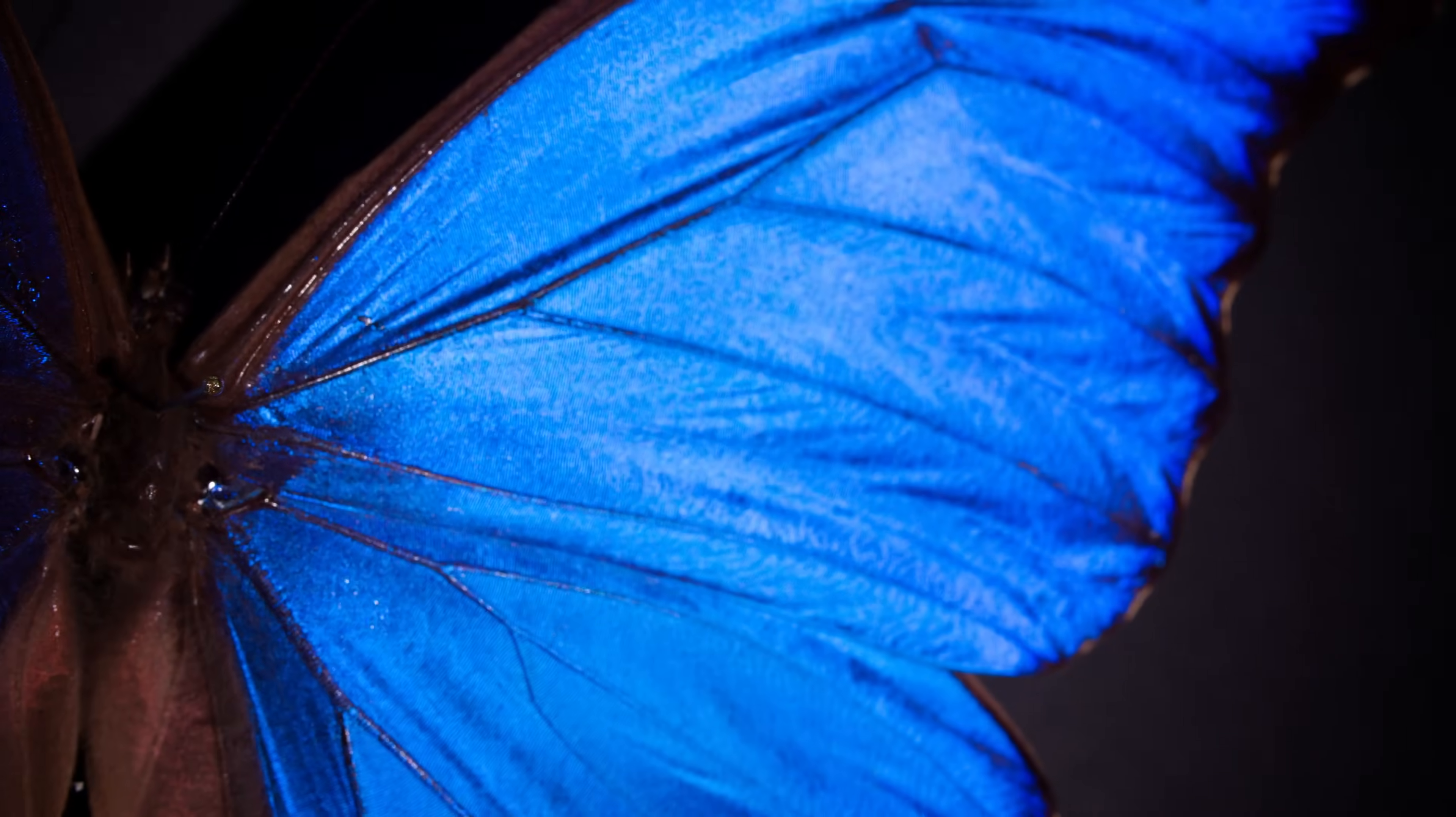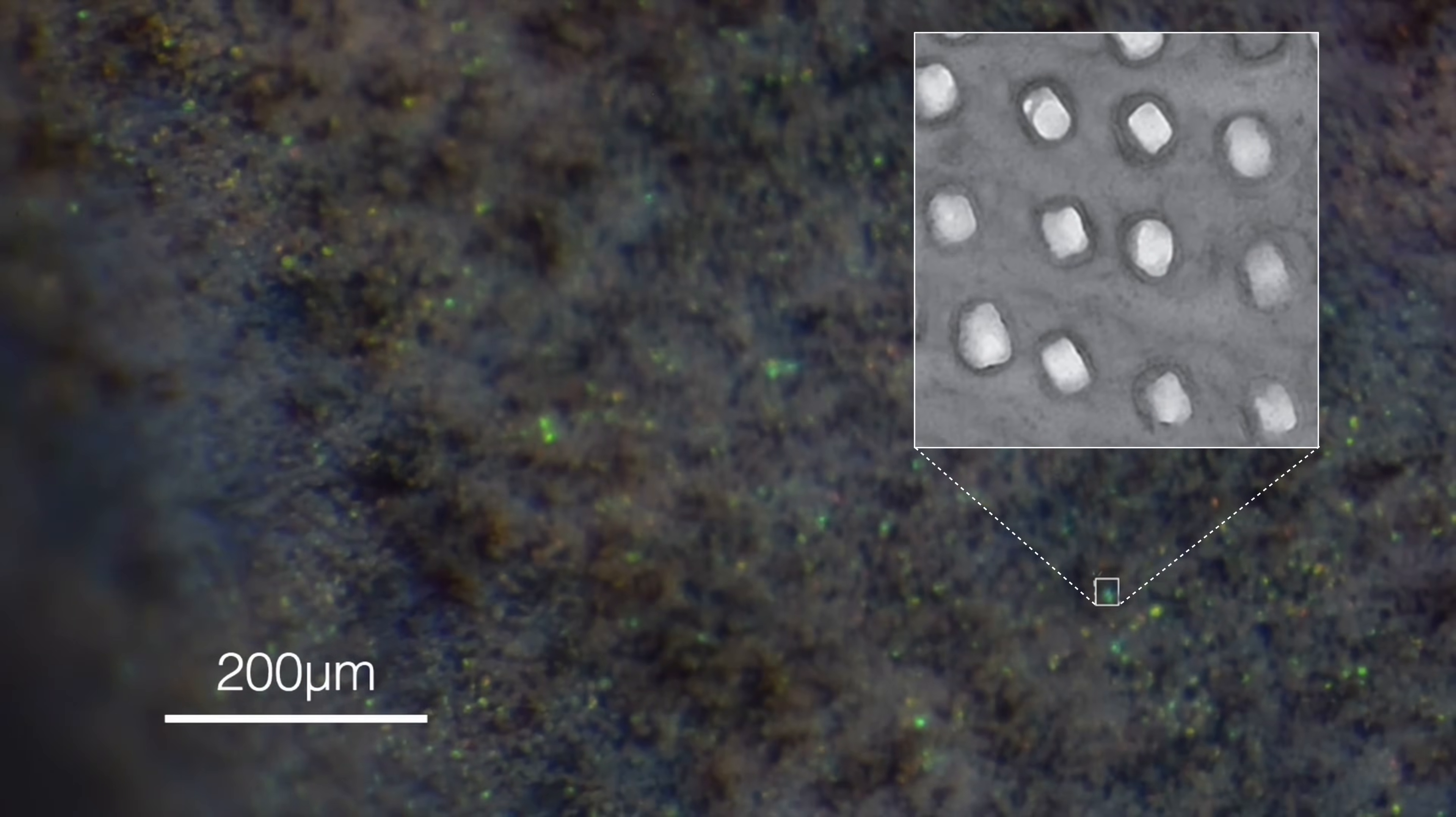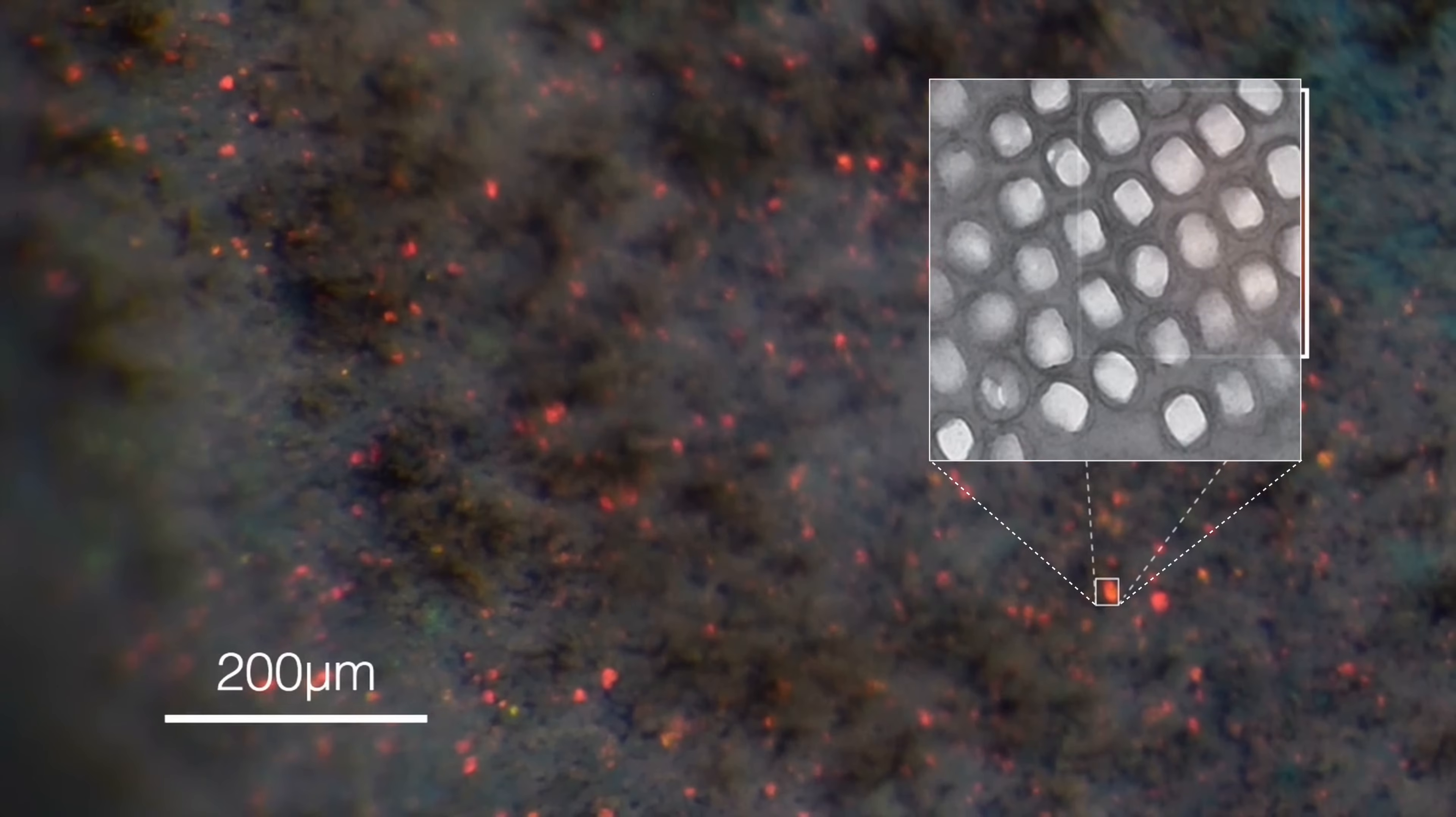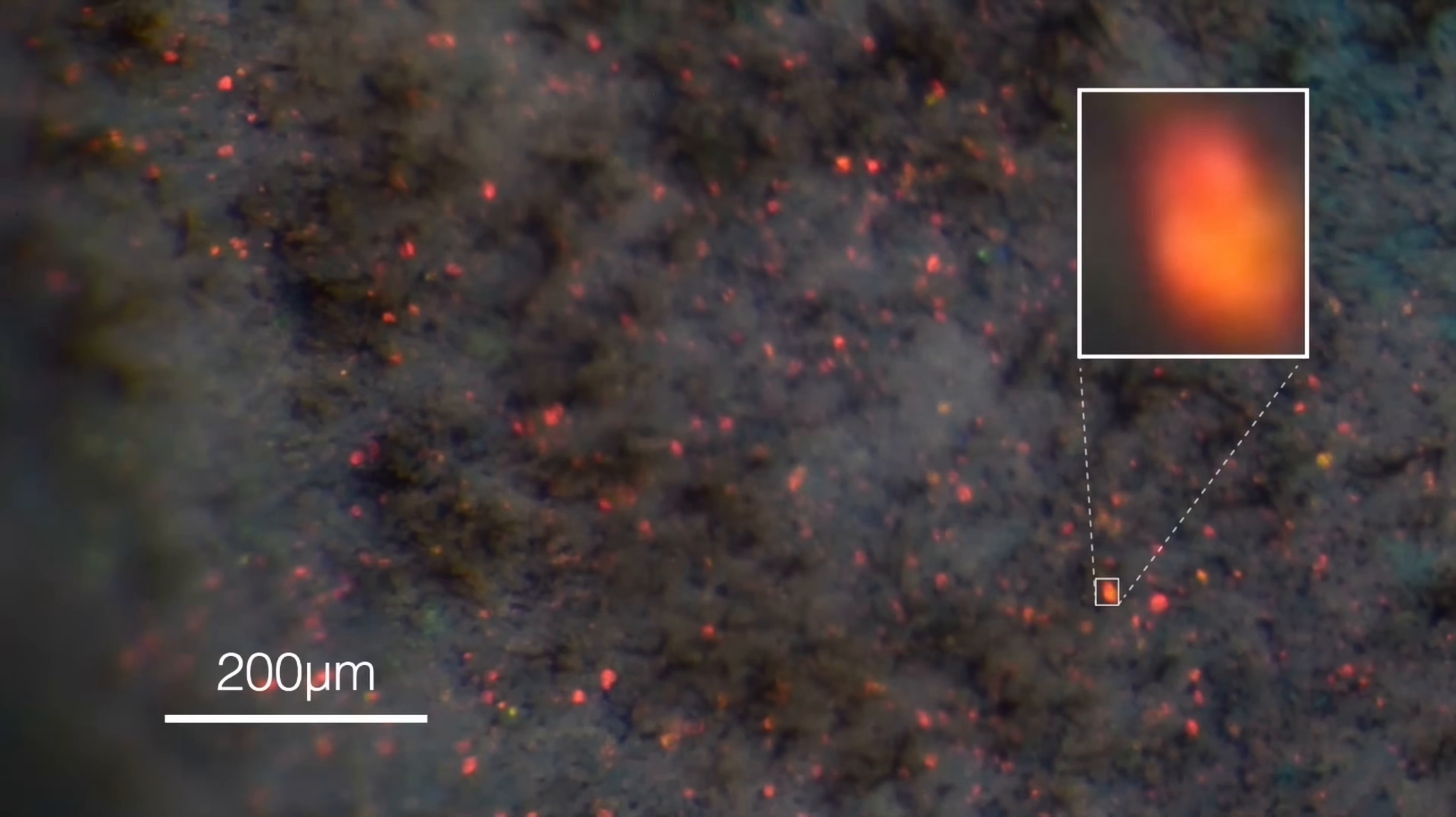The wings of the morpho butterfly have similar structures, which reflect brilliant blue hues. But unlike morpho butterflies, chameleons can stretch or contract the lattice, which moves the distance between crystals. Each of these points of light is an array of crystals. When the distance changes, the crystals reflect a different wavelength of light. The result is a dramatic shift in color.